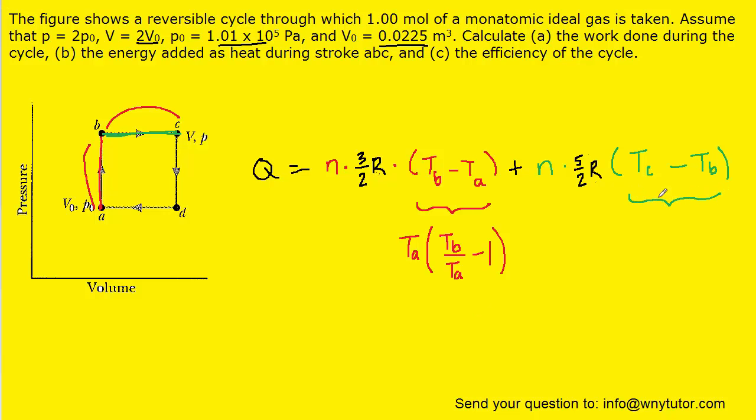We're also going to factor out a Ta from this term right here. Now if we did that, we would be left with Tc over Ta minus Tb over Ta. Pause the video, redistribute Ta just to make sure that you can see that indeed equals Tc minus Tb.